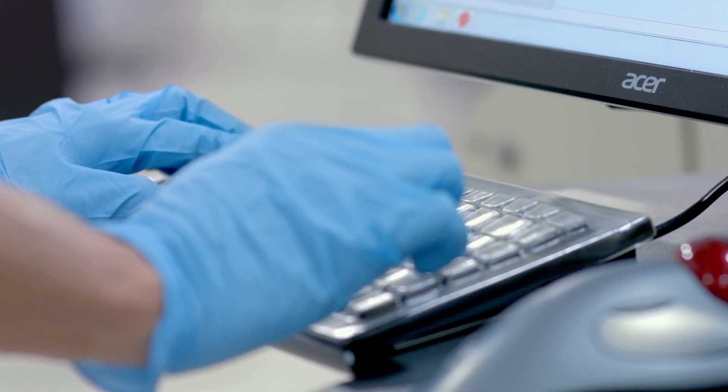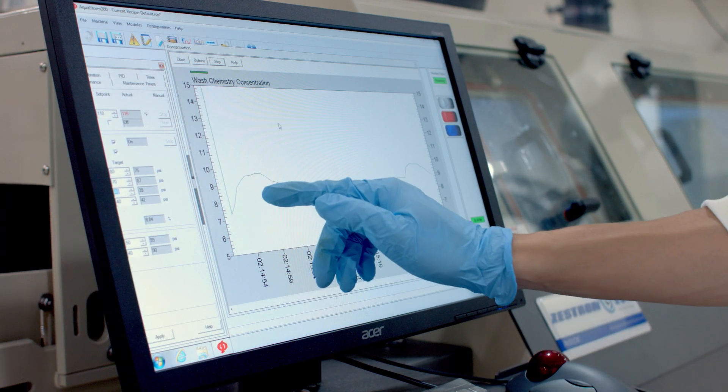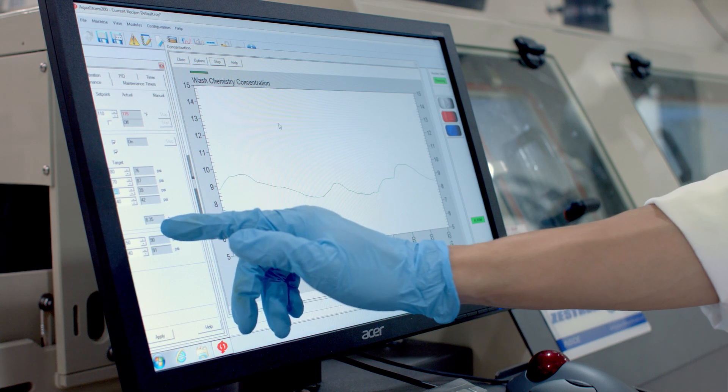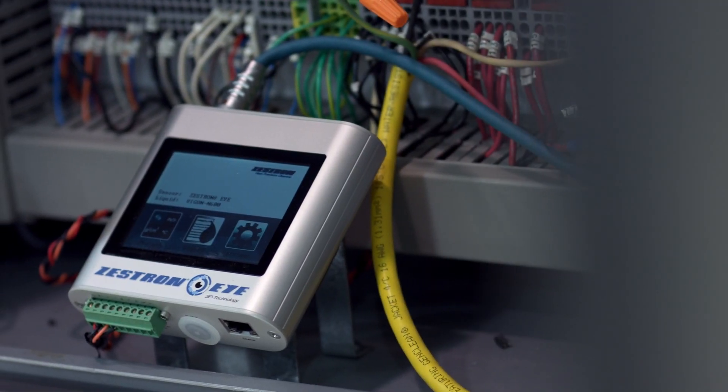The analog output allows transfer of the measured variables to an external device such as a PLC or desktop computer. This can be integrated onto most batch and inline cleaners and enables automated dosing for wash bath concentration management systems.